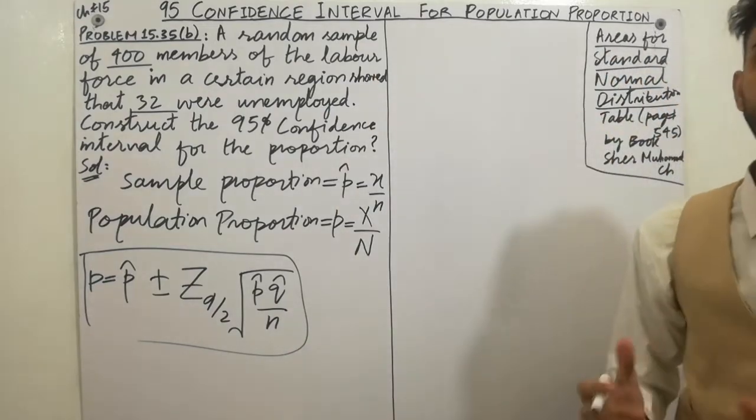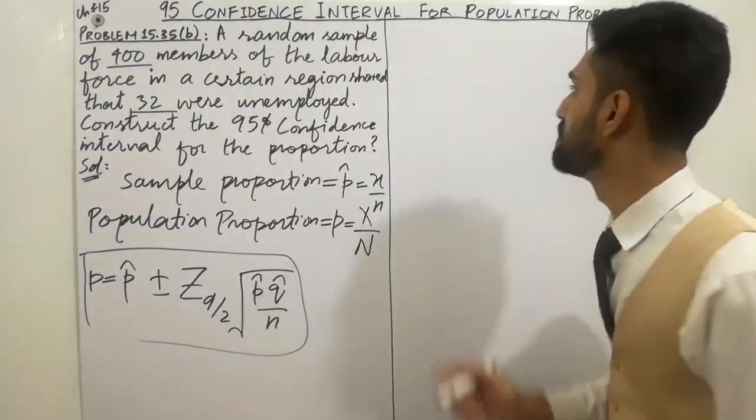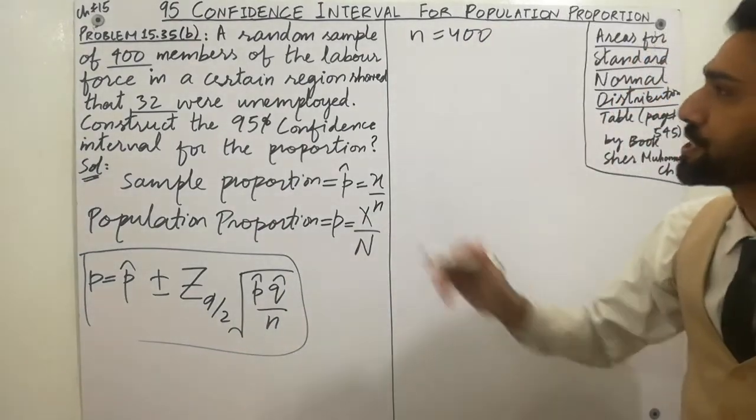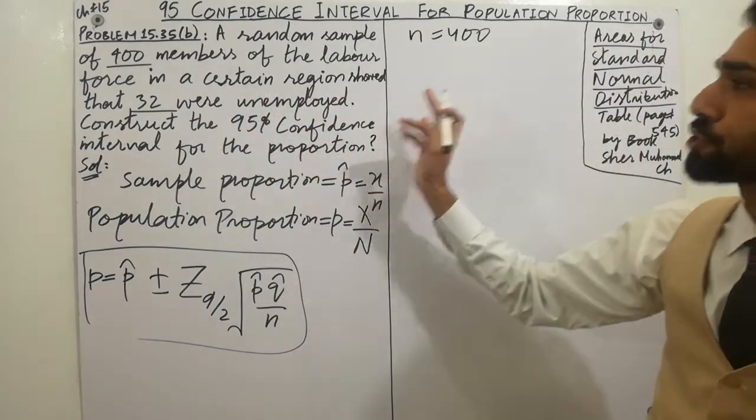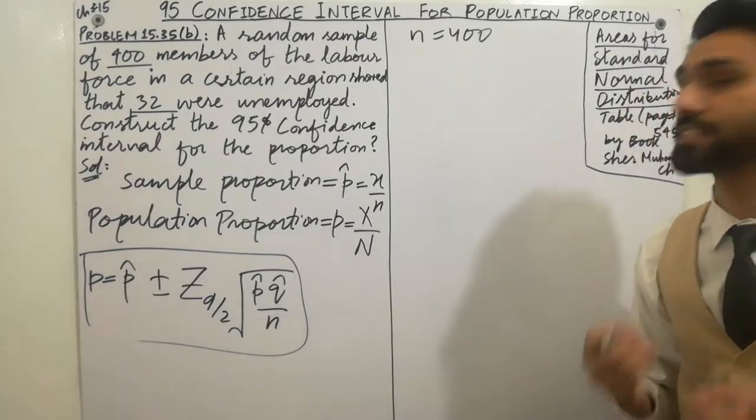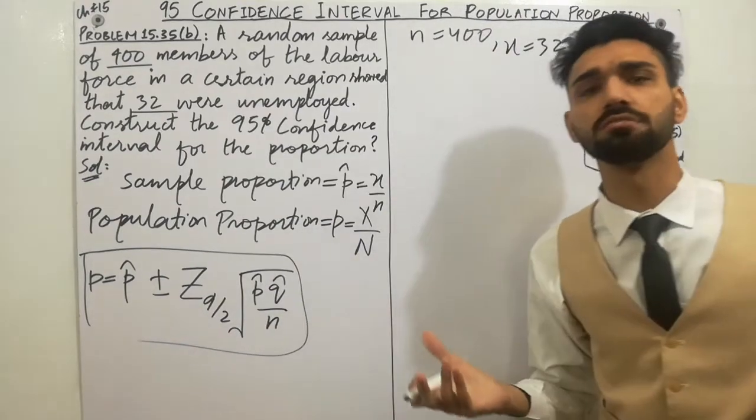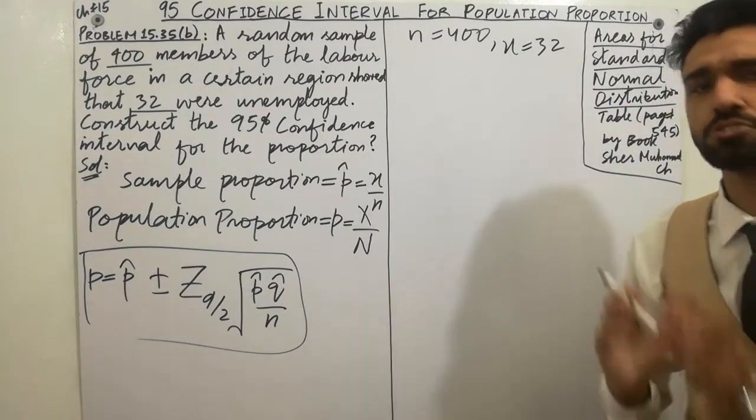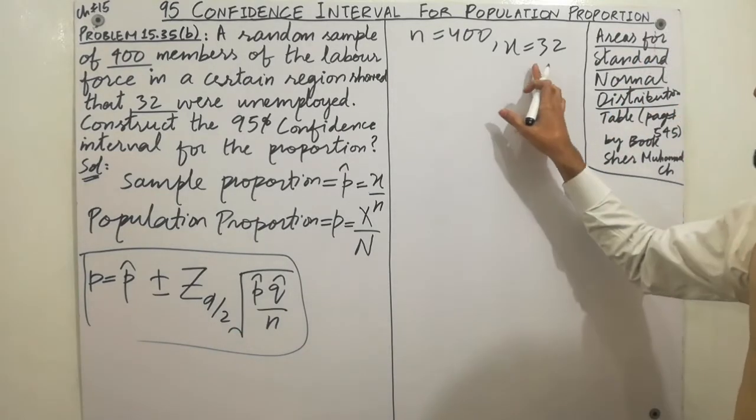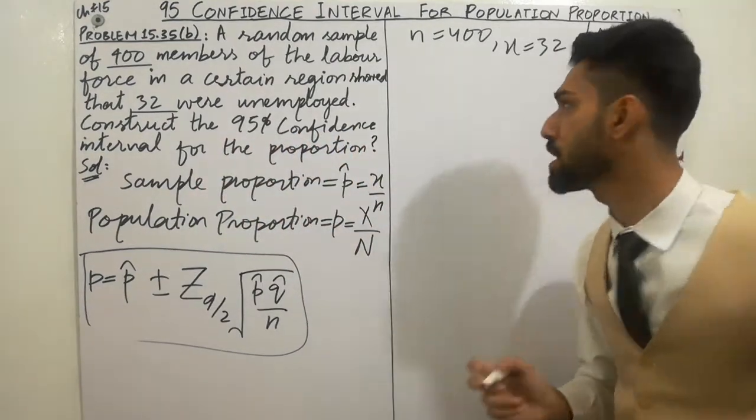Now solve the problem which is the main point of this lecture. A random sample of 400 members shows that - so number of samples are 400. In a certain region, 32 were unemployed. So that 32 is the x value - x is 32, which is not the sample mean. And next, construct the 95 percent confidence interval.